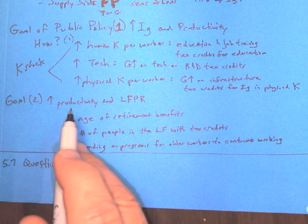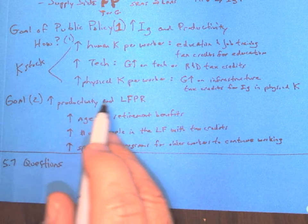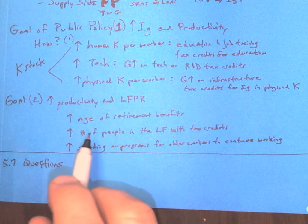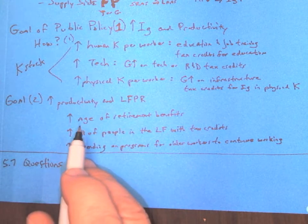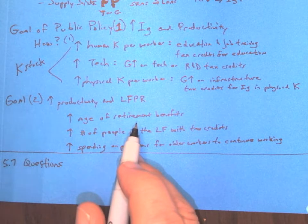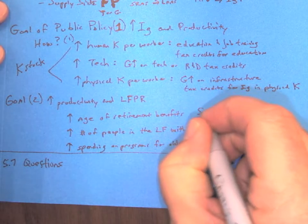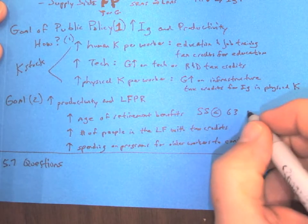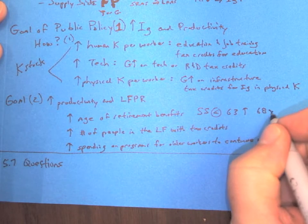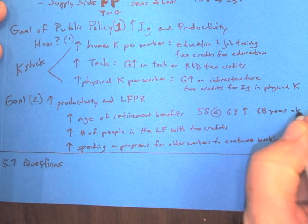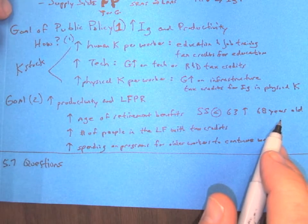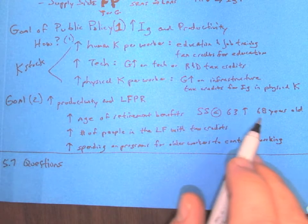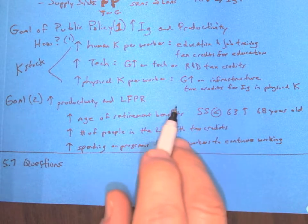Goal number two is how do we get this human capital to be more productive and or increase our labor force participation rate? Well, we can do things, for example, like raise the age of retirement benefits. And if people are drawing Social Security at 63 years old, we can raise that to 68 years old. Not the most popular version of getting people in the labor force, but that's something that our lawmakers discuss is don't let people get Social Security until they're older and they'll stay working longer.